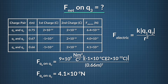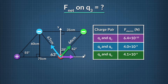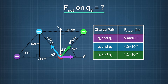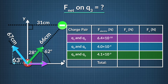Now we know all the force magnitudes and just need to figure out their directions. The magnitude and direction of the forces on q3 are shown. The direction of the arrows depends on whether each pair of charges repels each other, like q1 and q3, or attracts each other, like the other two pairs. We want to solve for the x and y components of each of these three vectors, so we can add them together to find the resultant force magnitude and direction.